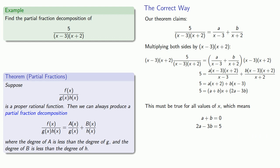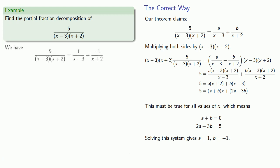And now this gives me a system of two equations with two unknowns a and b and I can solve that system of equations and I have a = 1, b = -1. And again this is the correct way to solve for a and b.